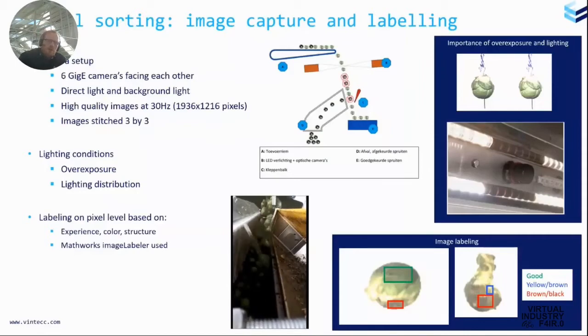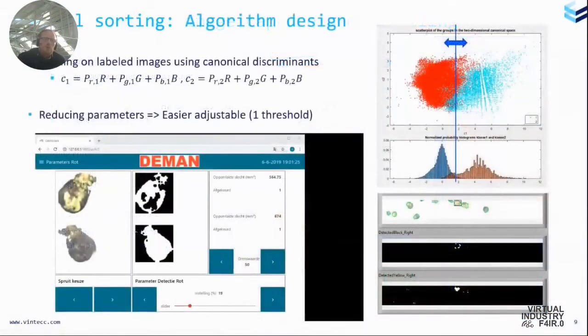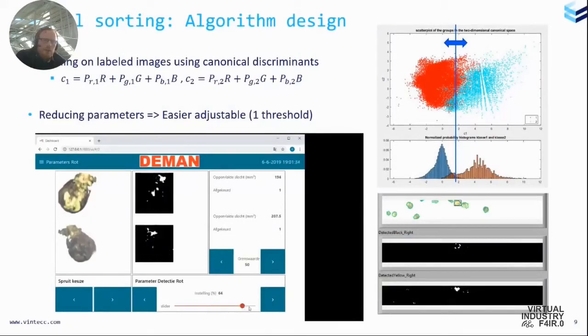So we have now good images. We have labeled them. So now it's time to go to the algorithm. Here you can see why we did use pixel labeling. So we label all these pixels as good and bad. So in the graph there, you see two point clouds. The left point cloud, the red one and the blue point cloud. So one point cloud is pointing all the good pixels and the other one is pointing all the bad pixels or the sprouts that were categorized as bad.